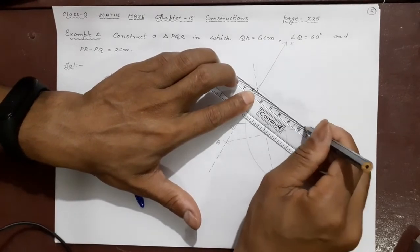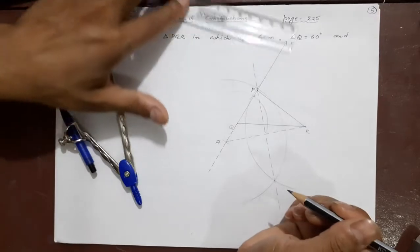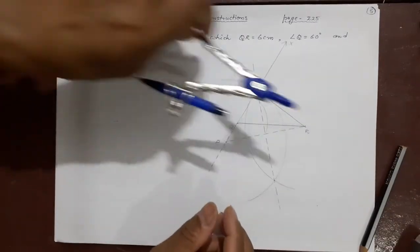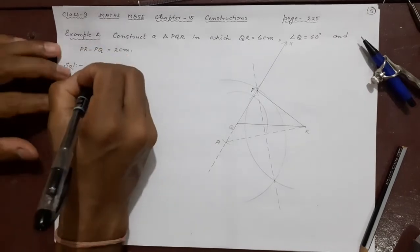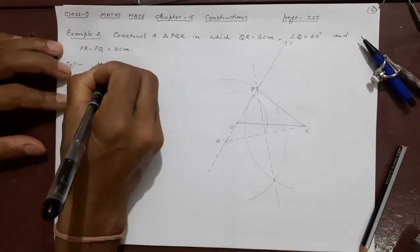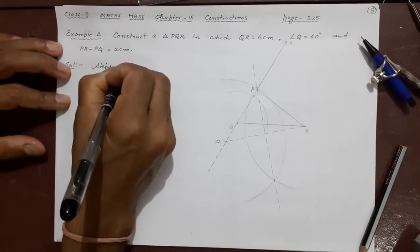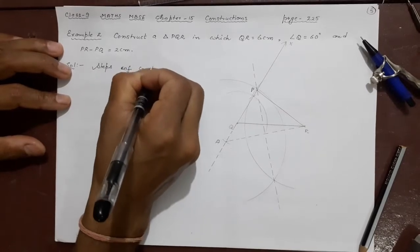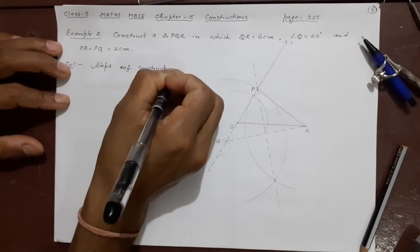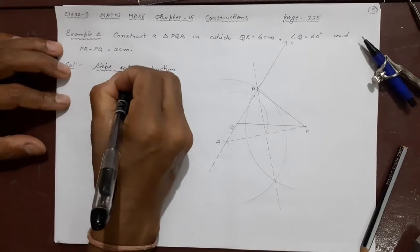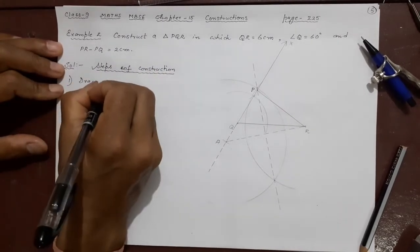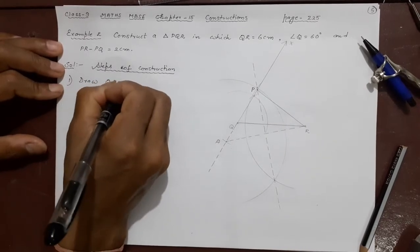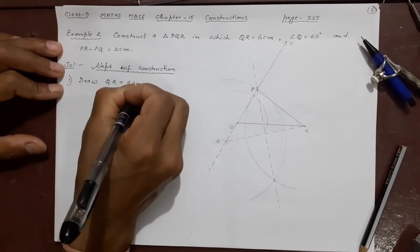Remember now after that just like a revision you will make all the steps. So let us write quickly what are the steps. The steps of construction. Number 1 draw just like BC here, what is that? QR equal to 6 cm.